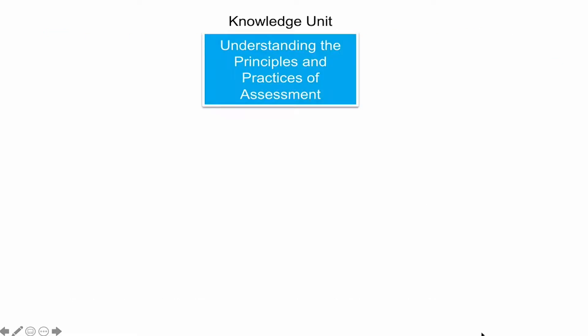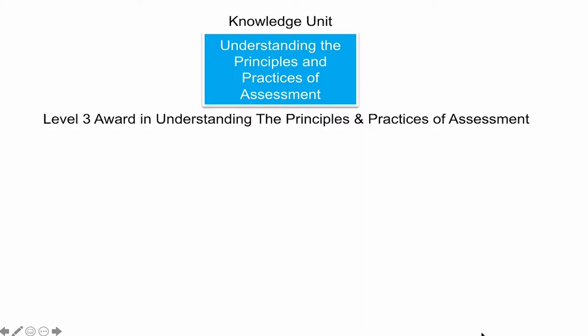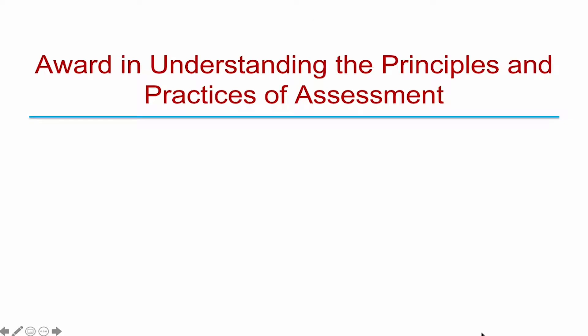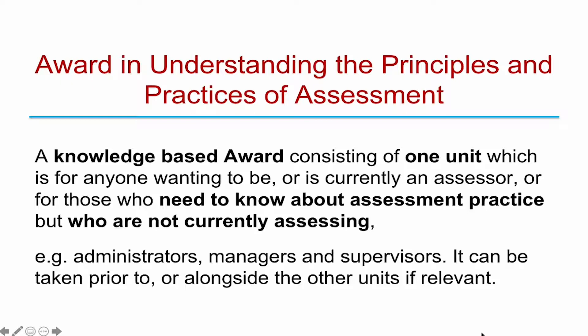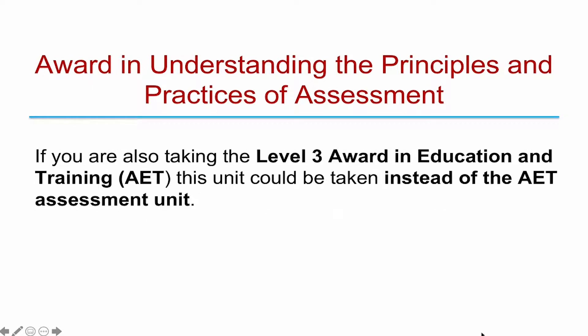The first one is a Knowledge Unit. In your Education and Training Award there is a Knowledge Unit called Understanding the Principles and Practices of Assessment. It is an optional unit in your Education and Training Award, so you can take it if you wish. If you do, you've covered this particular module. Or you can do it separately and get a Level 3 Award in Understanding the Principles and Practices of Assessment. This is a knowledge-based award for anyone wanting to be or currently working as an Assessor, or for those who need to know about assessment practice but are not currently assessing — such as Administrators, Managers and Supervisors. It can also be taken instead of the AET Assessment Unit if you're doing the Level 3 Award in Education and Training.